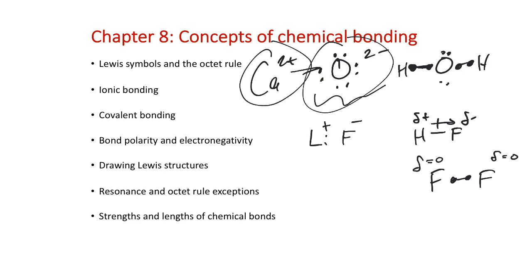We can have ionic compounds like LiF — metals and nonmetals. We can have polar bonds where relatively highly electronegative atoms are paired with lesser electronegative atoms like H and F; this is actually the most polar of molecular bonds we'll consider. And then we have nonpolar bonds where there is completely equal sharing of electrons across the nuclei in the bond.